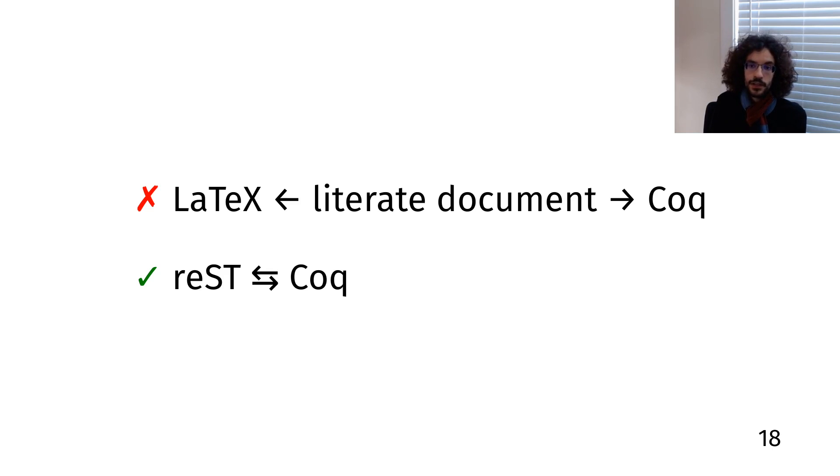For a literate Coq library, you would probably distribute the code-oriented view so that your users can compile your files as regular Coq sources without having to know anything about Alectryon. And for a book with a few Coq examples here and there, you might distribute the reStructuredText file instead.